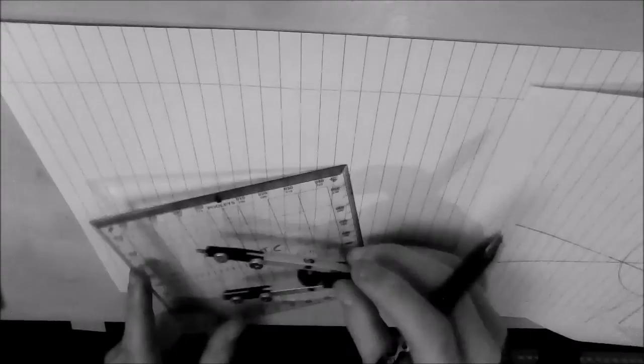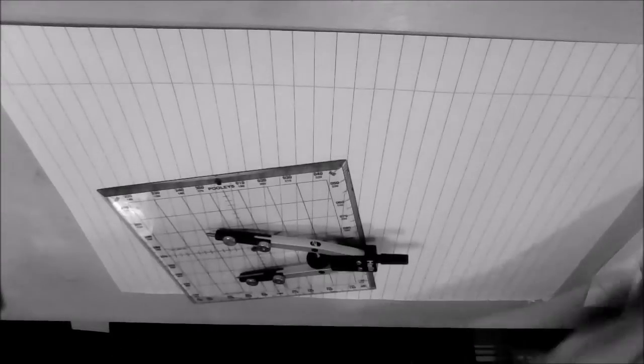So what you're going to need is your square protractor, your compass, and a pen, and that is all.